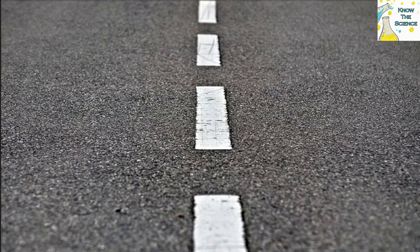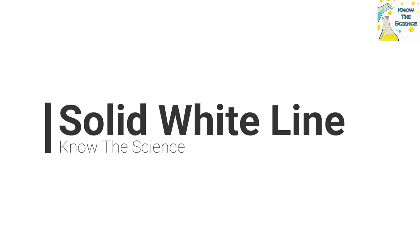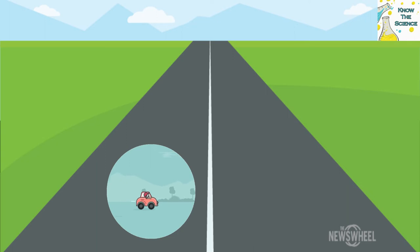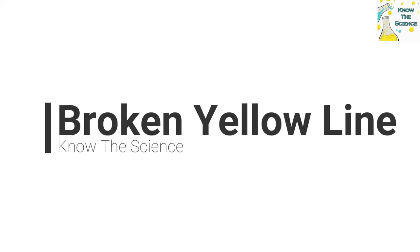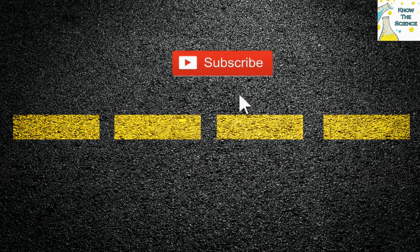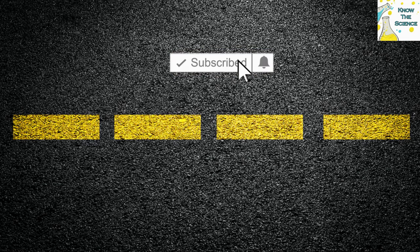Solid white line: solid white lines on the roads indicate that you cannot change lanes and should drive right on the lane you are already on. Broken yellow line: the broken yellow line on the roads indicates that passing is allowed, but keeping safety in mind.